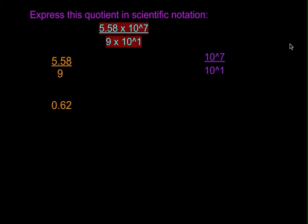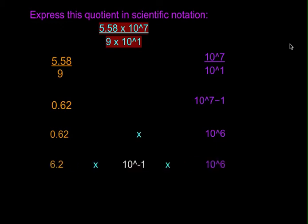10 to the seventh over 10 to the first — you have to subtract the bottom exponent from the top, and that will give you 10 to the sixth. But remember, you can only have one number to the left of the decimal point. So that would be 6.2 times 10 to the negative first, because that is what would give you 0.62. So now you have 6.2 times 10 to the negative first, times 10 to the sixth.